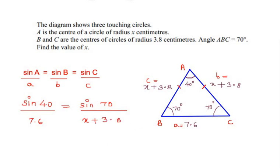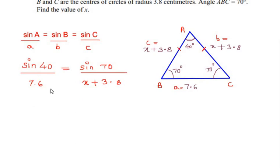So let us cross multiply and solve this example. x plus 3.8 comes on the other side, and let us take sine of 70 and this multiplies with the numerator. So we have it as times 7.6 divided by sine 40.